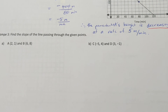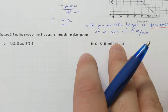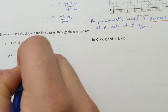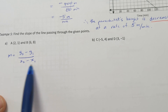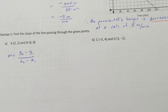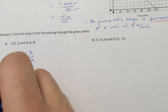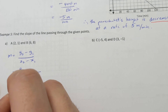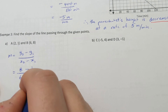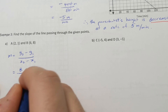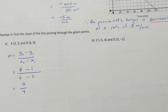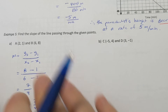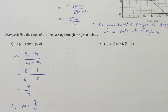Last example: find the slope of the line passing through two given points, A and B, and then C and D. Using m equals y2 minus y1 over x2 minus x1 — written as subscripts, not exponents. For points A and B: y2 is 8, x2 is 6, y1 is 1, x1 is 2. That gives 8 minus 1 over 6 minus 2, which is 7 over 4. No units, because there is no context to this question.